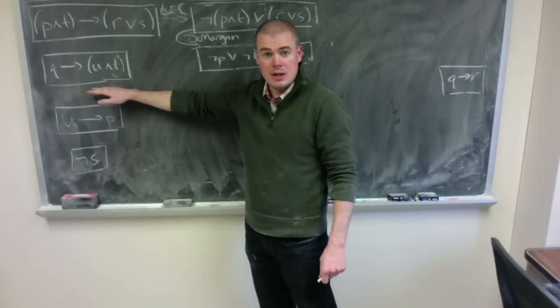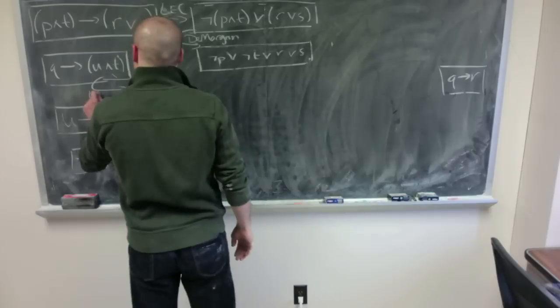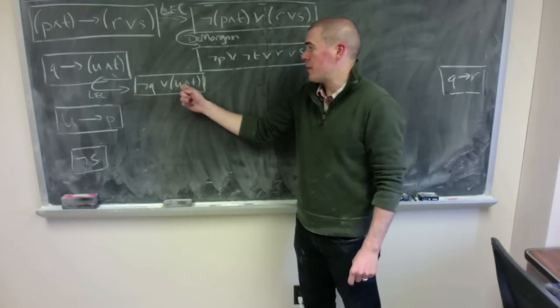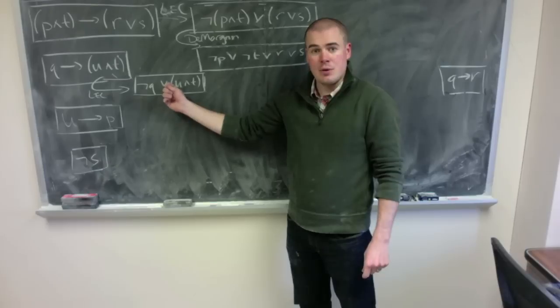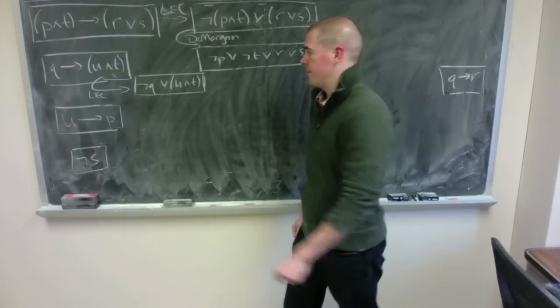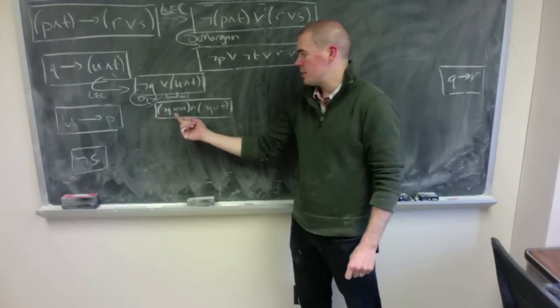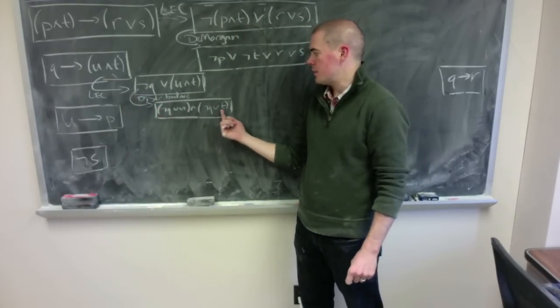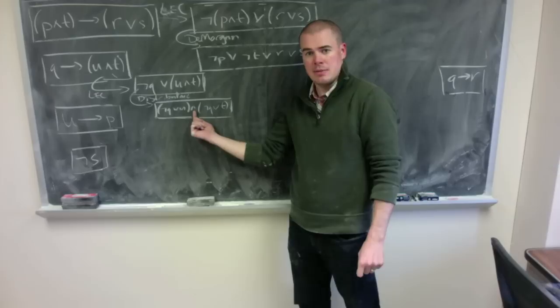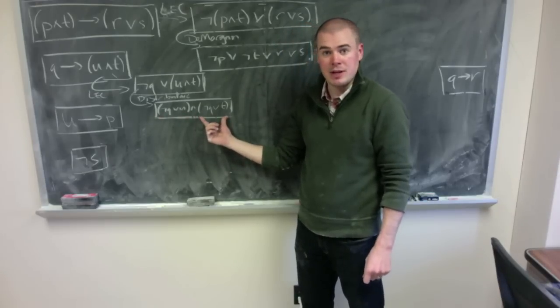So I'll start with my next premise. Q implies U and T and start going there. If I start with my logical equivalence of conditionals I see I have not Q or U and T and I see that I have an OR and an AND which means I want to distribute to see what this turned out to be. From there I see I have NOT Q or U and NOT Q or T. Now I have a statement where an AND is the first operation. It's the primary operation which means that I have this is true and this is true using the simplification.